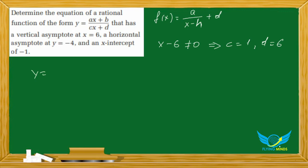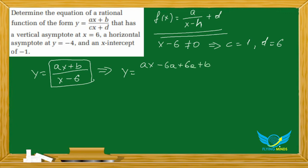What we're going to do next is add 6a and subtract 6a plus b over x minus 6. I'll show you why we do it. So here we're going to take a outside, so we have a times x minus 6 plus 6a plus b over x minus 6.